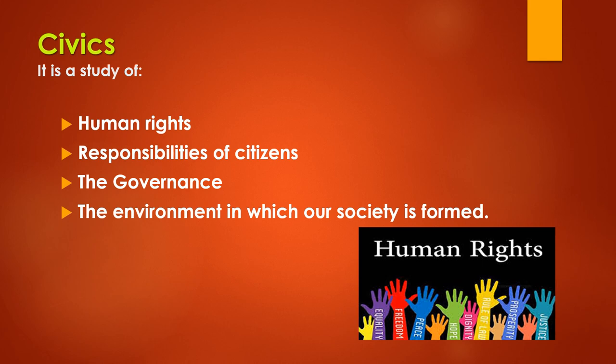Some examples of good governance seen in the past are good infrastructure, ample opportunities for employment, and better policies formed by the government. Fourth, the environment in which our society is formed. Environment plays a very important role. Environment means surroundings, and they affect everyone — they affect us, they affect policies, politics, and the market. So we study about environment also in civics.